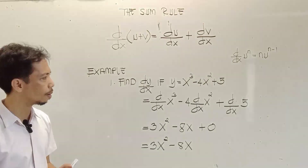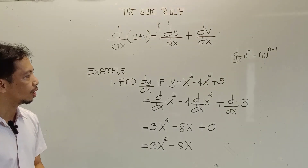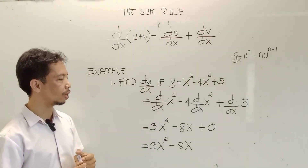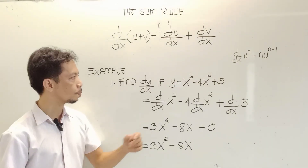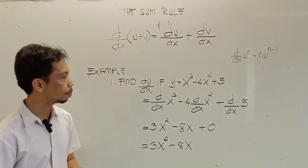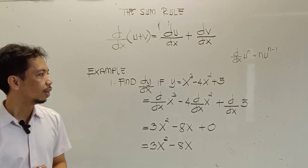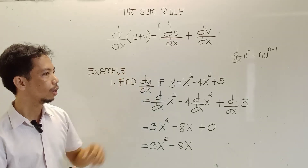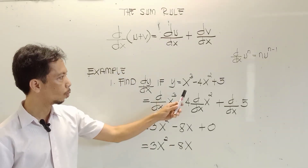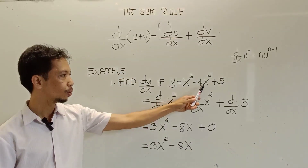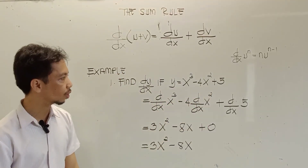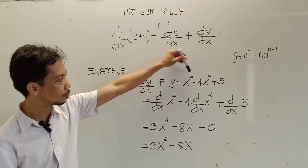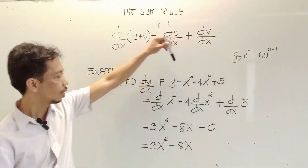So, what does it mean? For example, we have here: y is equal to x cubed minus 4x squared plus 5. In this example, we have how many terms? We have 1, 2, and 3 — three terms in this example: first term, second term, and third term.